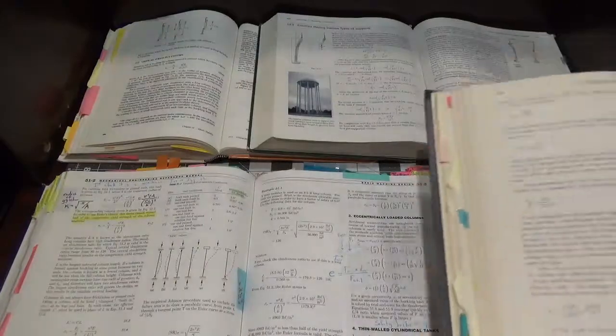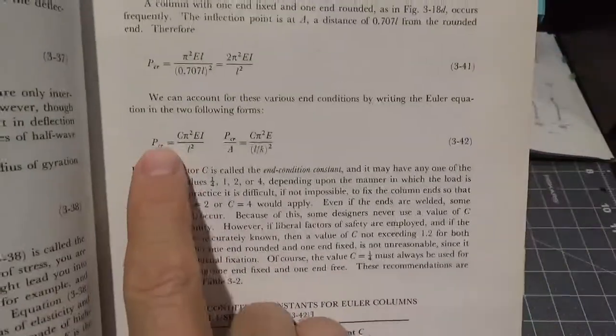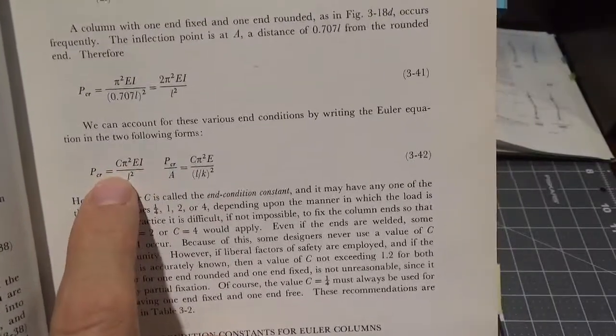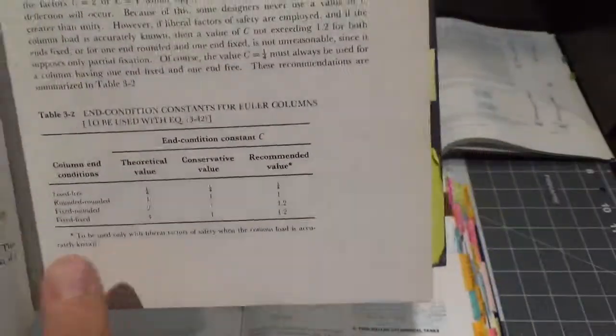And then you have good old Shigley's, where Shigley's just says, here it is, F critical, pi squared EI over L squared, and I'm just going to bundle everything into a C up there, and then here's the table.